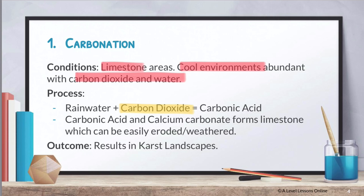When your carbonic acid combines with calcium carbonate, it forms limestone, and limestone can actually be easily weathered. As a result, this causes your karst landscape. The main weathering agents for karst landscapes are carbonation and solution, because carbonation produces this acid, and when it combines with calcium carbonate, it causes erosion to take place very quickly.